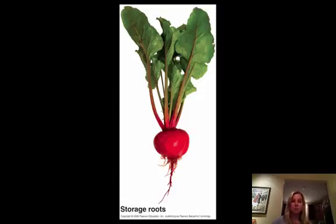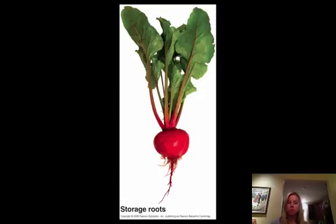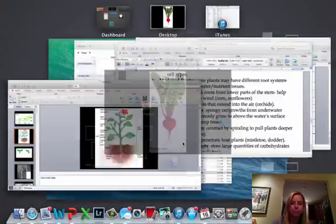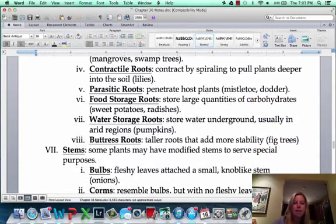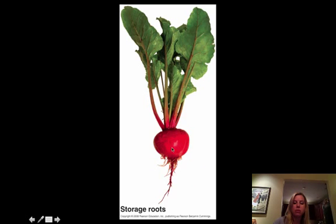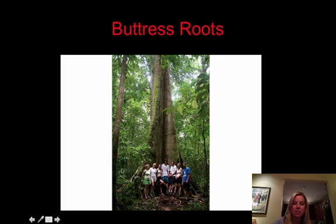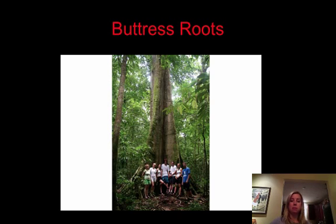Then you're going to have different types of storage roots. You can have a food storage root like this radish, and that's going to be as a result of low nutrients in the soil, so it's going to store up nutrients whenever it can. A water storage root — like pumpkins — is designed to grow in a dry area, so when it rains they store the water. And then buttress roots are these large roots that help keep big trees from tipping over.